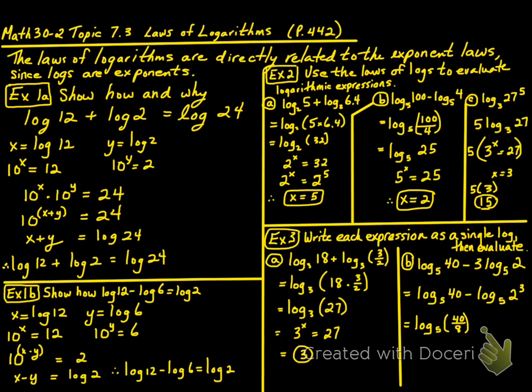This equals log₅(40/8) = log₅(5). Since 5^1 = 5, the answer is 1.